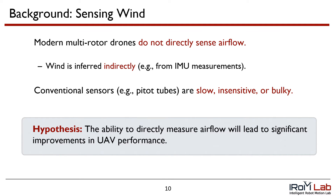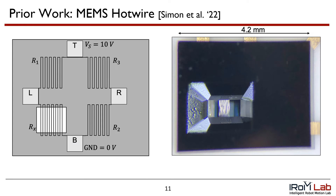Our hypothesis in this work is that the ability to directly measure airflow will lead to significant improvements in UAV performance. The sensor onboard FlowDrone uses the MEMS hotwire, which consists of four platinum wire arrays arranged in a Wheatstone bridge. One of these arrays, the bottom left, is exposed to the flow, allowing the flow speed to be related to a measured voltage through differential cooling, much like a conventional hotwire anemometer.